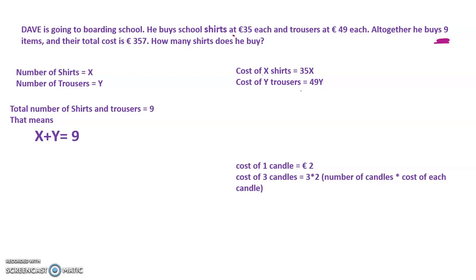Cost of each shirt is 35 euros. Cost of each trouser is 49 euros. Number of shirts he bought is x, so cost of x shirts is 35 into x. Similarly, cost of each trouser is 49 euros and number of trousers bought is y, so cost of y trousers is 49 into y.